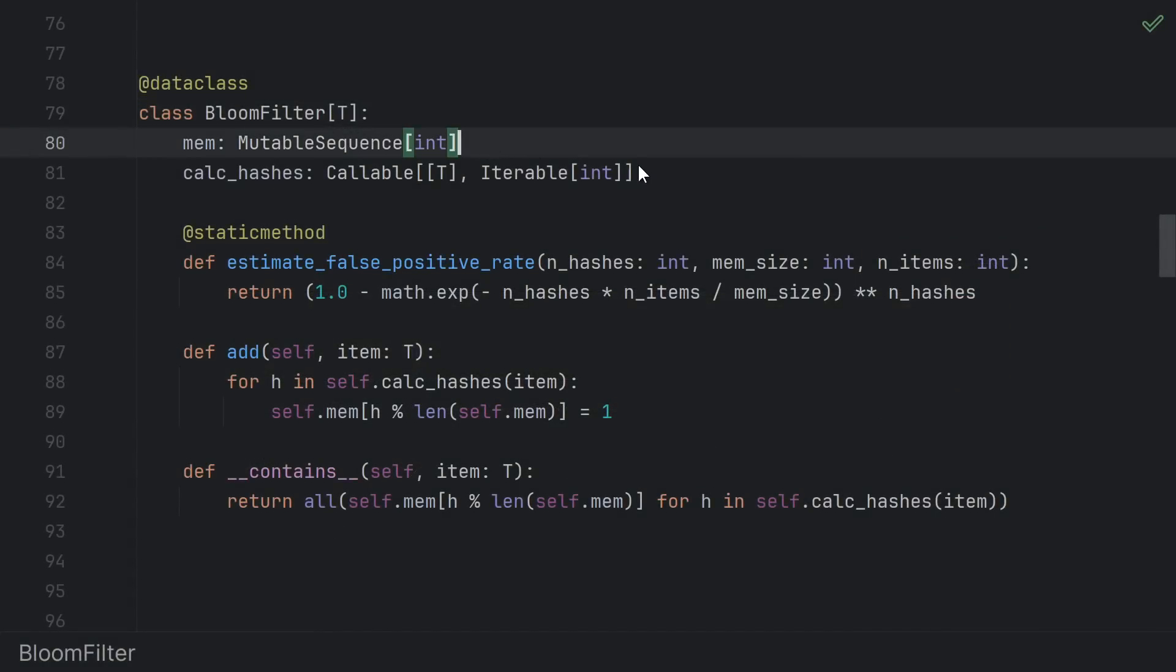We take in the memory, and a function that computes the hashes. I chose to use a function that outputs multiple hashes, rather than to store a list of hash functions, because hashes may share computation. Like first computing the 256-bit hash, then splitting that into 5 48-bit chunks, there's no need to recompute the 256-bit hash 5 times.